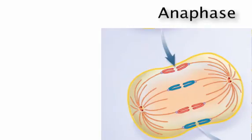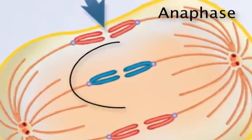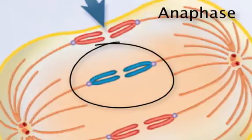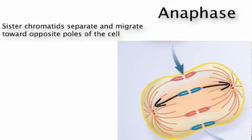In anaphase, an enzyme splits the sister chromatids from one another at the centromere. Each chromatid is now a separate chromosome. Each one migrates to opposite poles of the cell as motor proteins in the kinetochore crawl along the spindle fiber.